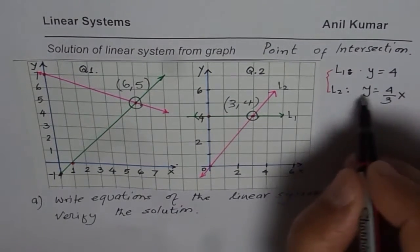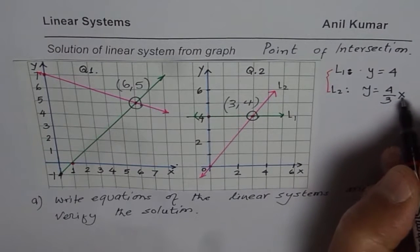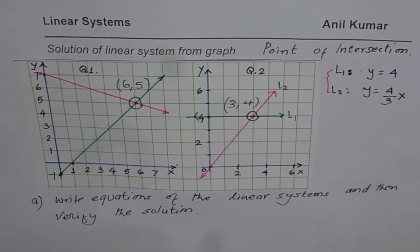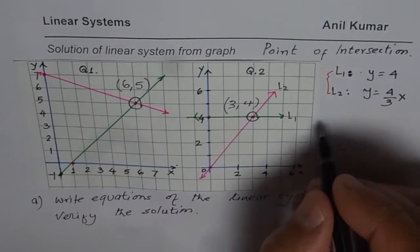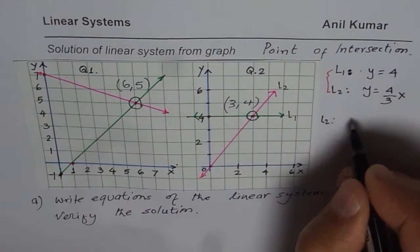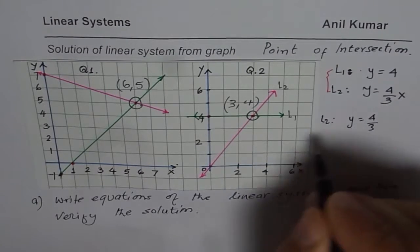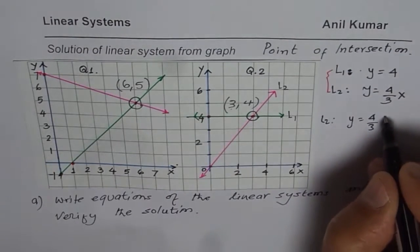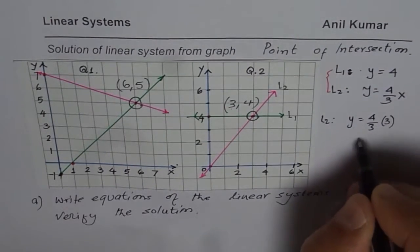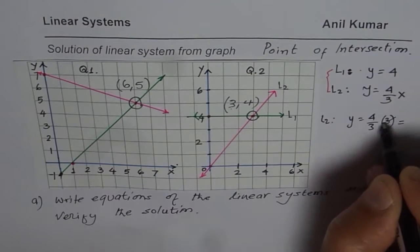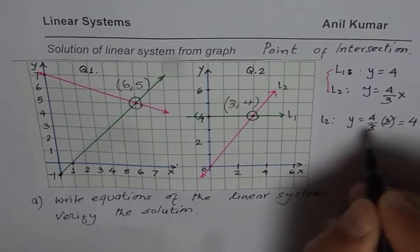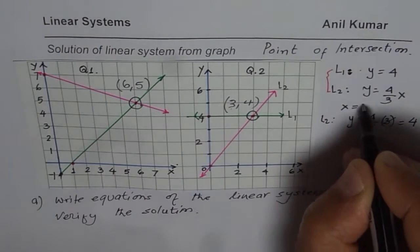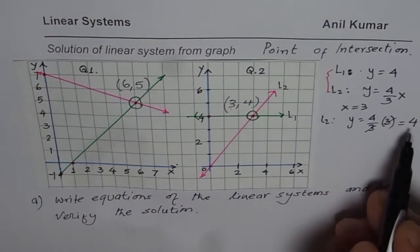Let's verify from line 2. In line 2, I will replace x with 3 and try to find what y is. From line 2, we can say y equals 4 over 3. If I substitute x equals 3, I get the value of y as 3 and 3 cancels as 4. Substituting x equals 3, we do get 4.